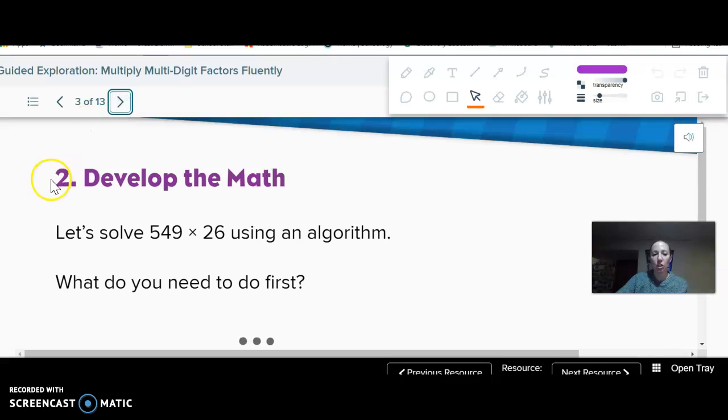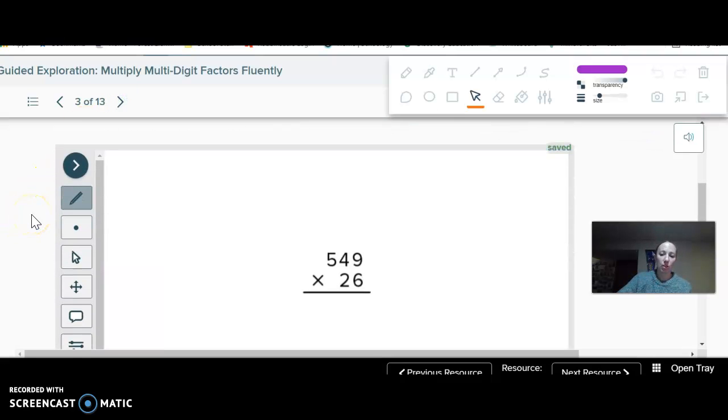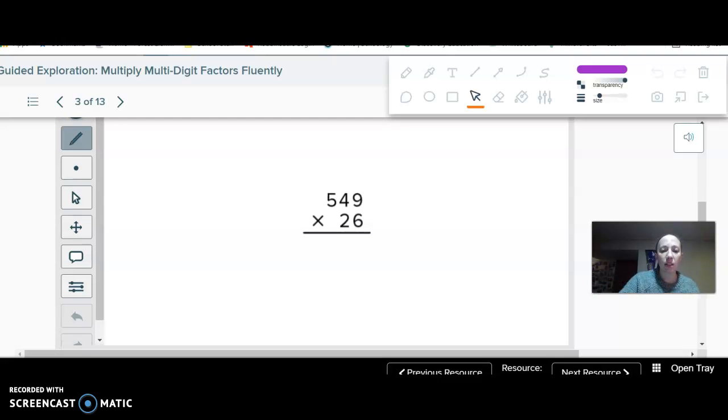If we are using an algorithm, first we need to multiply this 6 by everything in the top number. We're doing 6 times 549, essentially ignoring the 2 for now. 6 times 9 is 54, so I write the 5 or carry the 5 and write the 4. I'm ignoring that 2 for now. Then I do 6 times 4 is 24 plus 5 is 29.